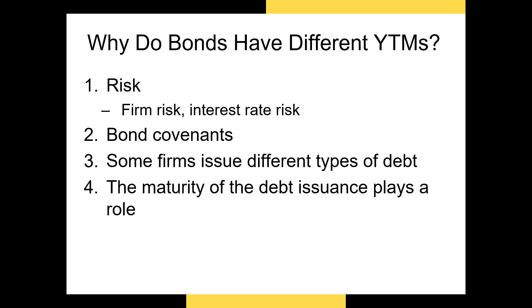Another reason why some bonds have different yields to maturity is because some bonds come with covenants. Bond covenants are restrictions on the activity of the borrower that increase the likelihood that the lender will be paid what they're owed. They are mentioned in the bond indenture agreement, which is signed when the bonds are first issued. If the bond comes with strong covenants, the borrower is less likely to default, so the lower risk should allow the borrower to pay a lower yield to maturity.